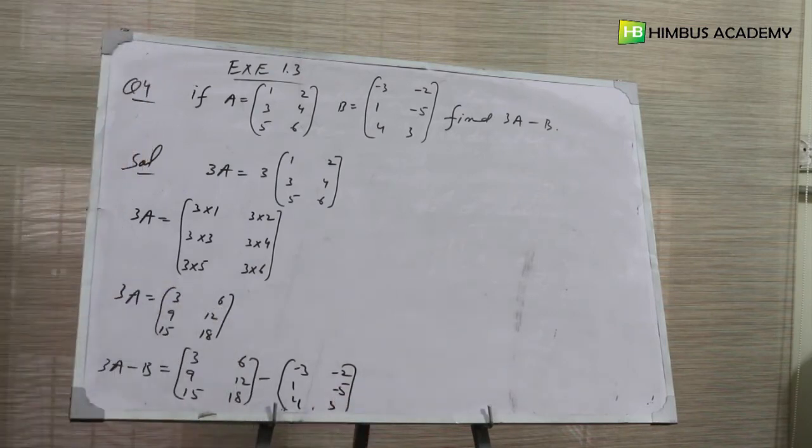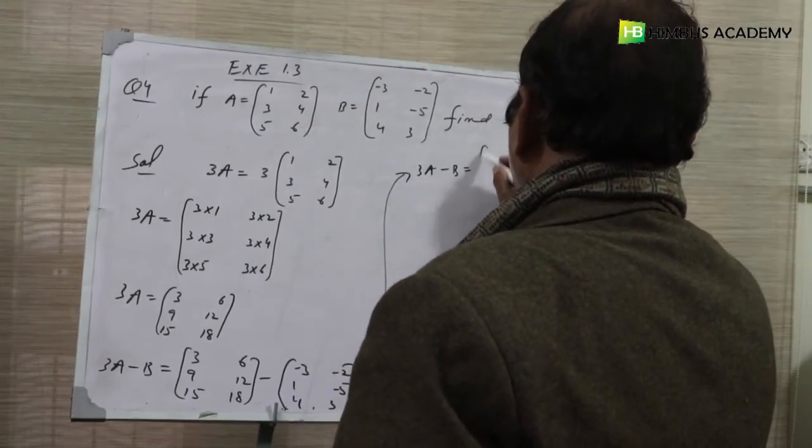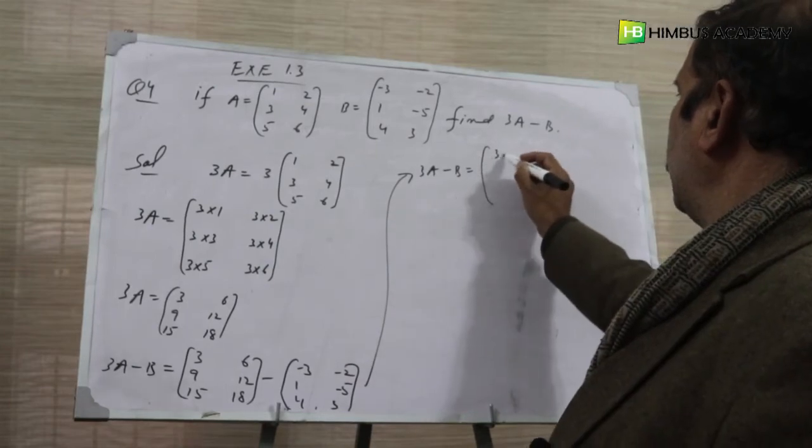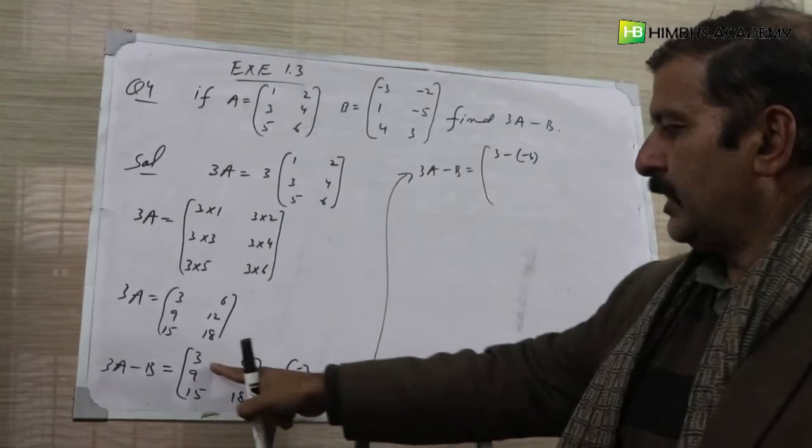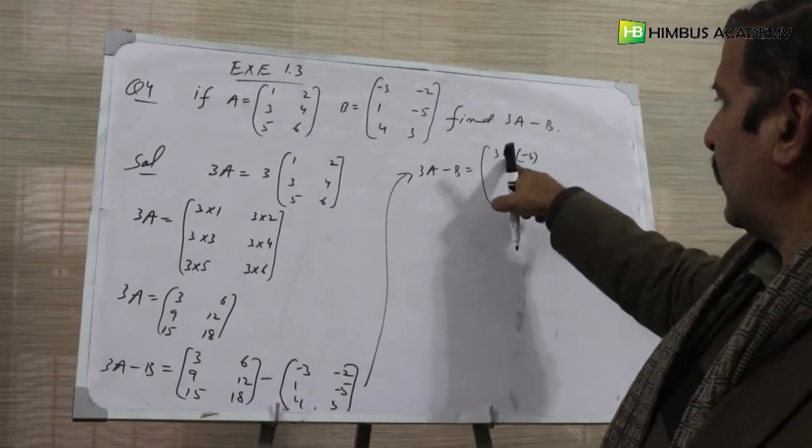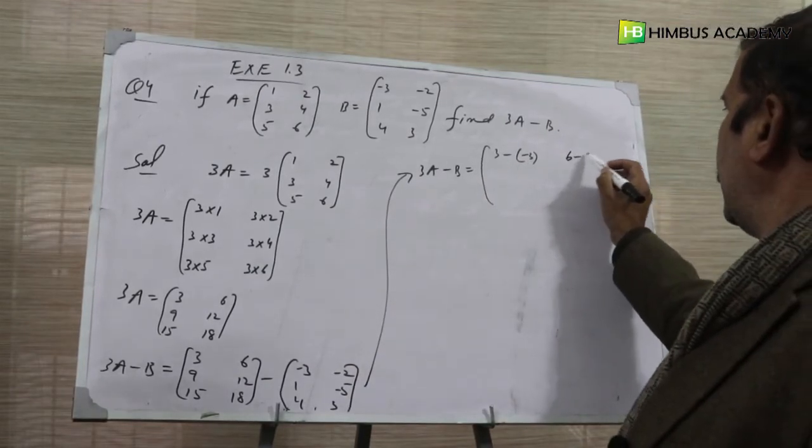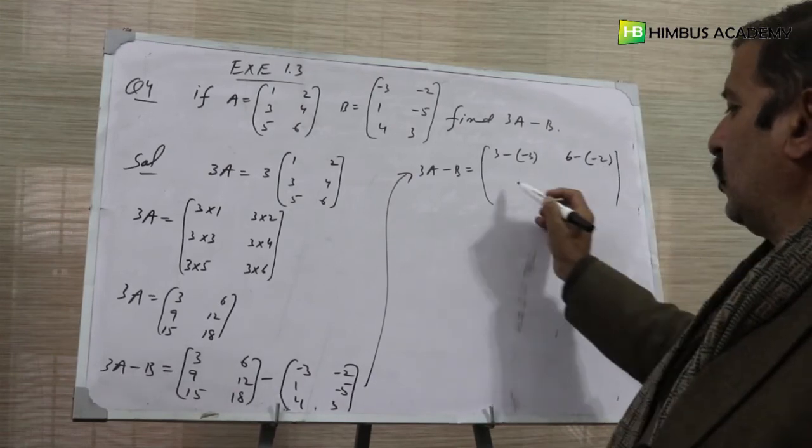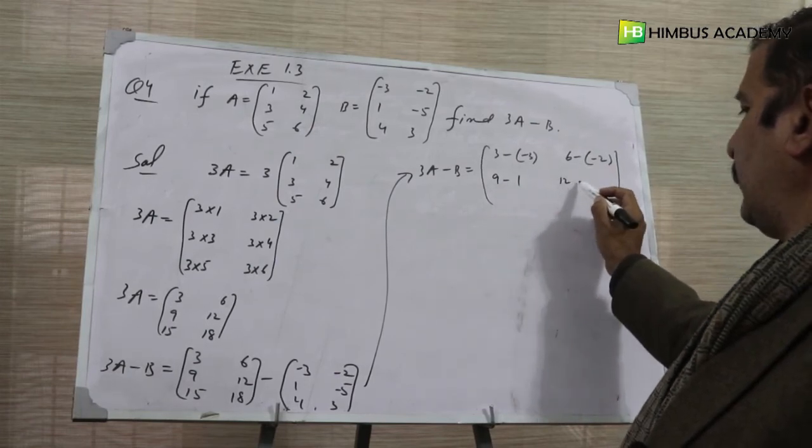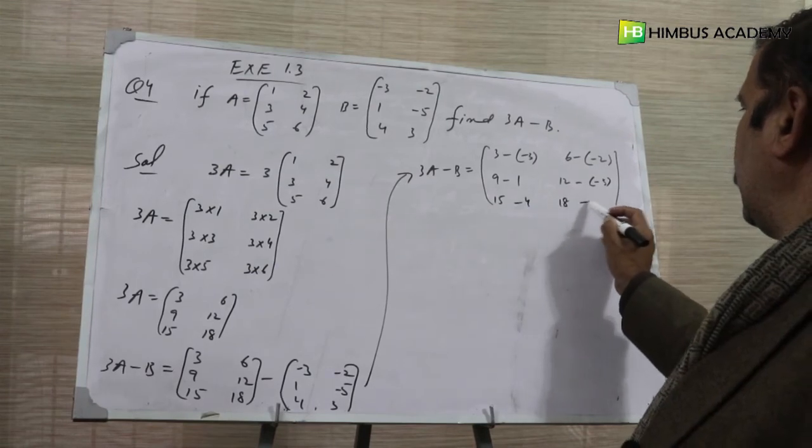Now 3A minus B equals subtracting corresponding elements. 3 minus minus 3. This subtract sign is the subtraction operation, and this minus is the sign of the 3 itself. Then 6 minus minus 2, 9 minus 1, 12 minus minus 5, 15 minus 4, 18 minus 3.